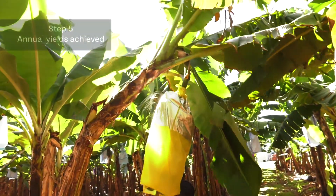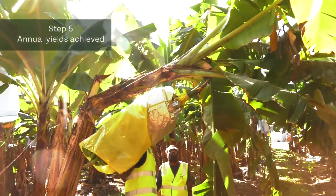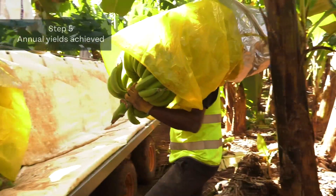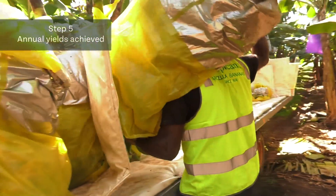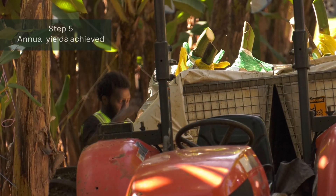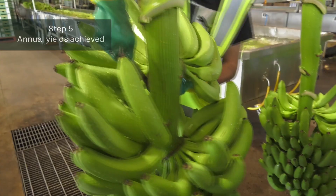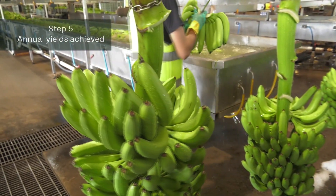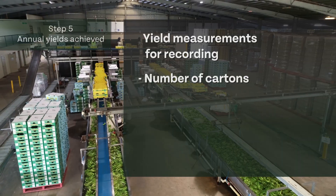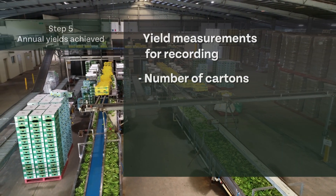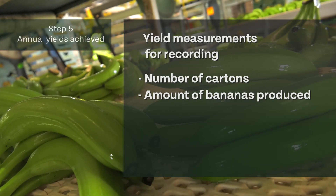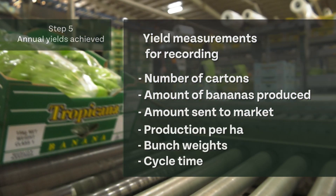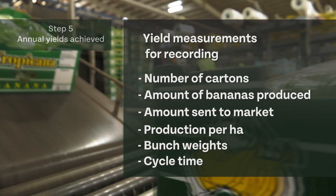In addition to recording inputs, growers must make a record of their annual banana production. This demonstrates that productivity is maintained or improved under the nutrient management regime. The yield measurement used can be determined by the grower, but the same measure should be used each year. Yield measurements for recording include the number of cartons per year per farm, the amount of bananas produced per year per farm, the amount of bananas sent to market, or any other annual quantifiable measurement of production.